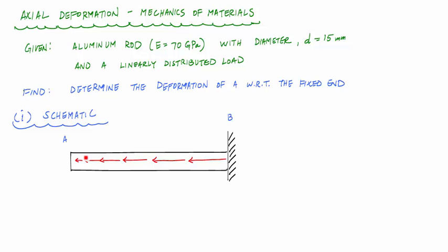At point A, that distributed load has an intensity of zero, and at point B it has an intensity of 30 kilonewtons per meter. The length of this rod is 600 millimeters.